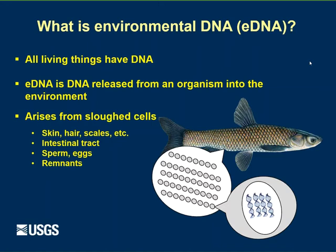It arises from sloughed cells — from skin, or hair, or scales, or through the intestinal tract. Broadcast spawners will release sperm and eggs into the environment that have DNA in them, or when animals die, their remains also have a lot of DNA. These cells come off the animal through various different ways, and inside each of those cells there are many copies of DNA. That's what we analyze when we do environmental DNA analysis.